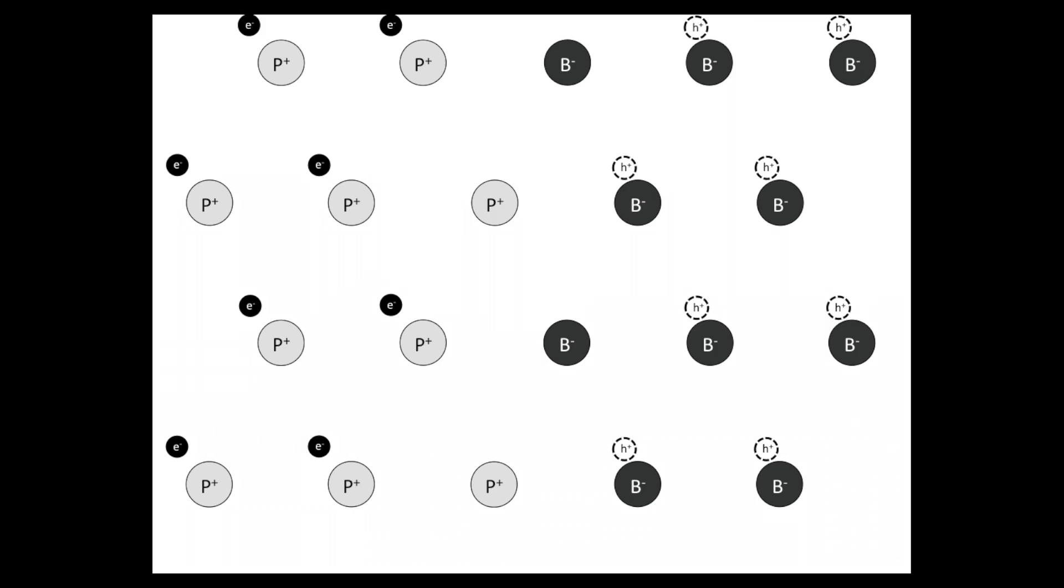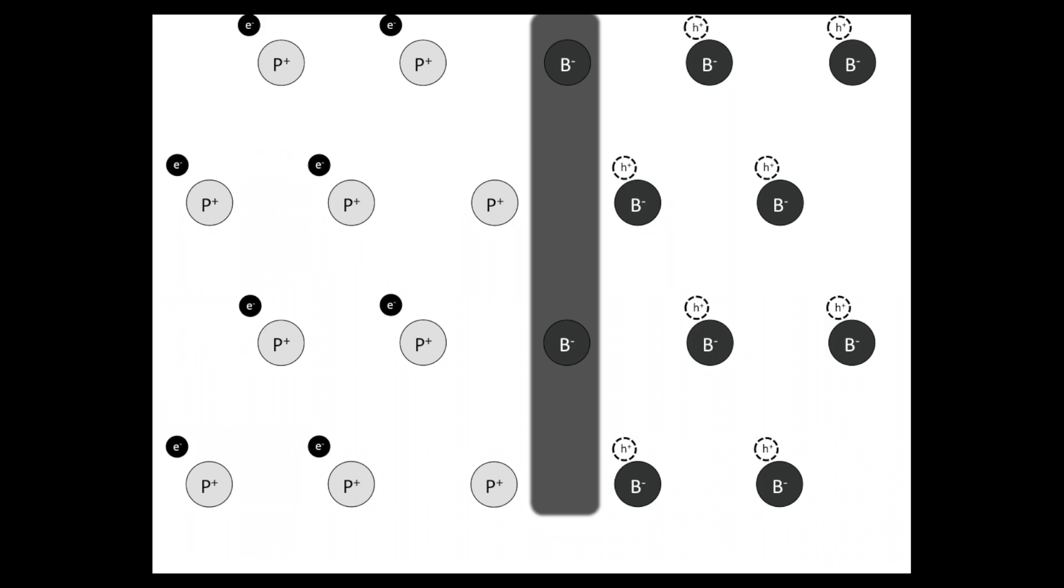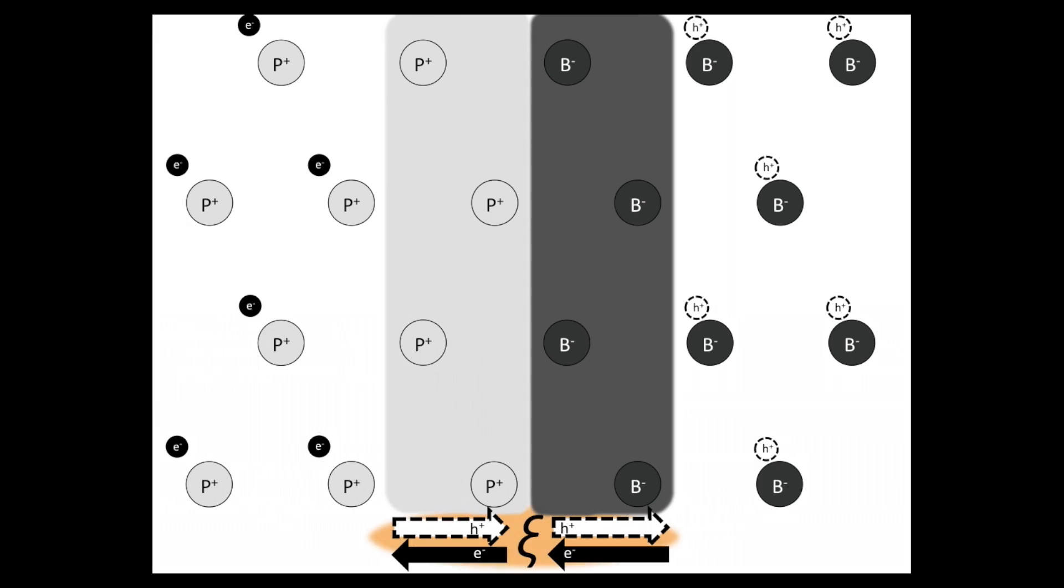This leaves a region at the interface of immobile static charges, with the net charges negative on one side and positive on the other. These opposing sheets of charge create an electric field at the interface, which at this point is very weak. As charges continue to diffuse, they are still able to move across this weak electric field and neutralize. As this happens, the sheets of net positive and net negative static charges widen and the electric field grows in strength.